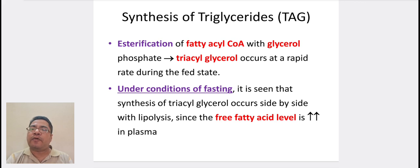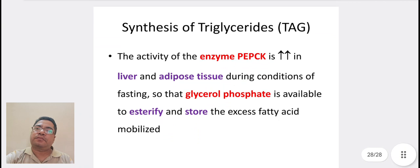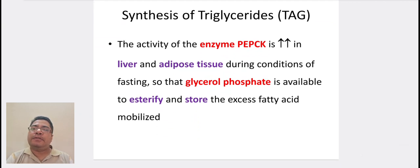Esterification of fatty acyl-CoA and glycerol phosphate to produce triacylglycerol occurs at a rapid rate during the fed state. Under conditions of fasting, synthesis of triacylglycerol occurs side by side with lipolysis, and the free fatty acid level is increased in plasma. The glycerol phosphate is derived from the metabolism of glucose in the fed state by channeling dihydroxyacetone phosphate, an intermediate of glycolysis. In the fasting state, glycerol phosphate is derived from dihydroxyacetone phosphate formed during gluconeogenesis. The activity of PEPCK, i.e., phosphoenolpyruvate carboxykinase, is increased in liver and adipose tissue during fasting so that glycerol phosphate is available to esterify and store excess fatty acids during mobilization.